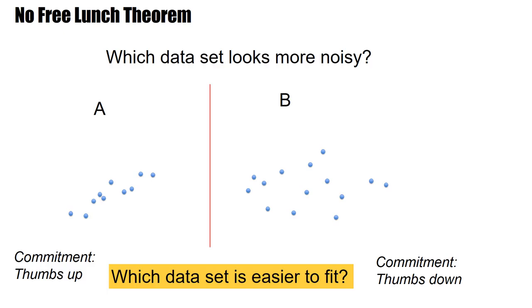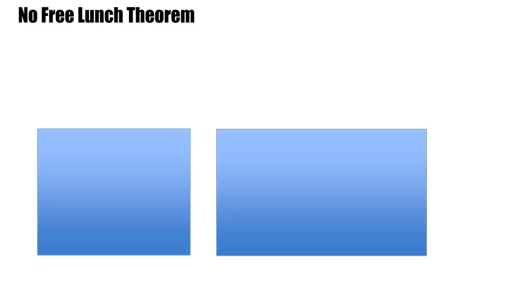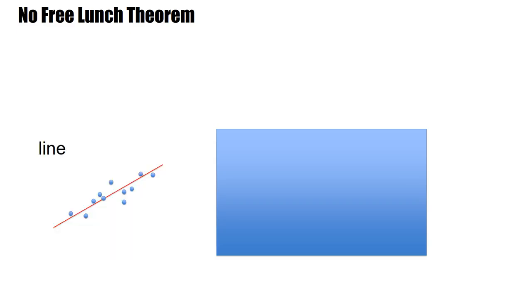So if you think A, then you put your thumb up. If you think it's B, then you put your thumbs down. And so what is the answer? Well, A is easy to fit. It looks like a straight line with a little bit of noise.